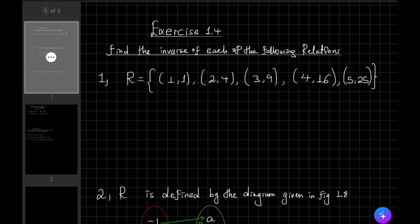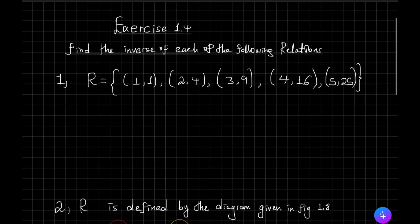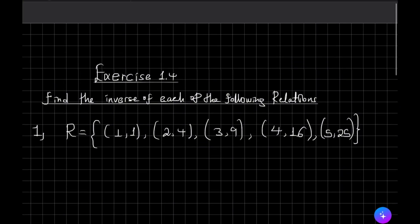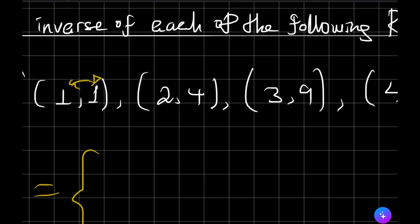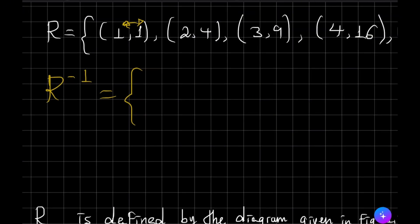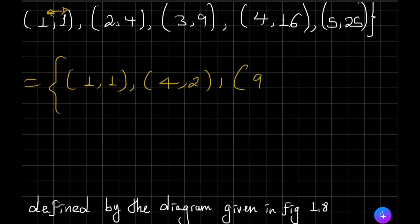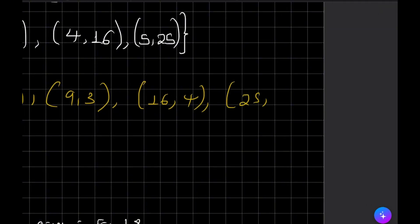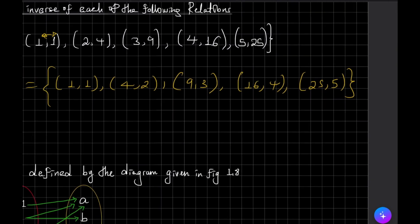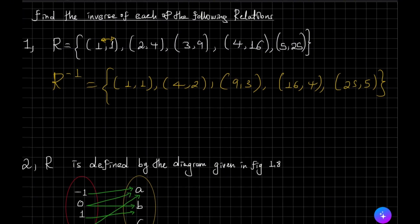To find the inverse of a relation, we interchange the place of the elements. The inverse of a relation: given the pairs (1, 1), (2, 4), (3, 9), (4, 16), (5, 25), the inverse relation swaps domain and range. These are the inverse relation pairs.